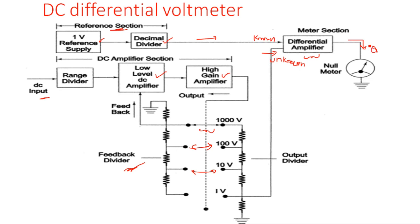The third mode is already discussed — it is the conventional DC voltmeter, where a single resistor is in series with the meter.